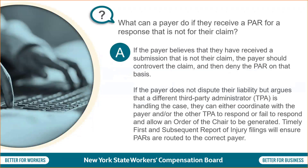What can a payer do if they receive a PAR for a response that is not for their claim? If the payer believes they have received a submission that is not their claim, they should controvert the claim and then deny the PAR on that basis. If the payer does not dispute their liability but argues that a different TPA is handling the case, they can either coordinate with the other TPA to respond, or fail to respond and allow an OOTC to be generated. Timely first and subsequent report of injury filings will ensure PARs are routed to the correct payer.